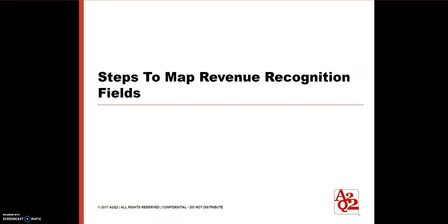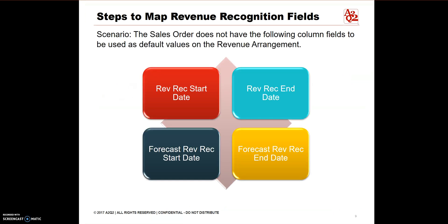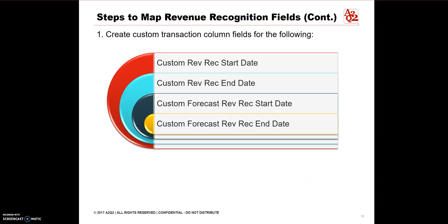Now let's go to the step-by-step procedure of mapping the revenue recognition fields. In this sample procedure, the Sales Order will not have the following column fields to be used as default values: RevRec Start Date, RevRec End Date, Forecast RevRec Start Date, and Forecast RevRec End Date. We will now create the custom transaction column fields for these four: Custom RevRec Start Date, Custom RevRec End Date, Custom Forecast RevRec Start Date, and Custom Forecast RevRec End Date.